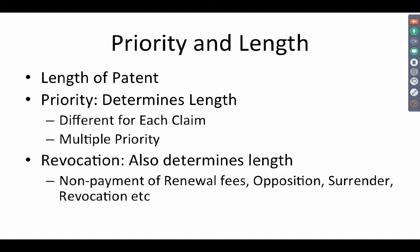But when you file a provisional and then follow it up with a complete, and that complete has a PCT related to it, then you enter multiple jurisdictions and it may get complicated in determining priority. Each claim has a priority, and claims can have different priorities. Claims can have multiple priorities based on the disclosures that eventually lead to the filing of a complete. Revocation of a patent also determines its length — if a patent is revoked by opposition or revocation, the term of the patent comes to an end.